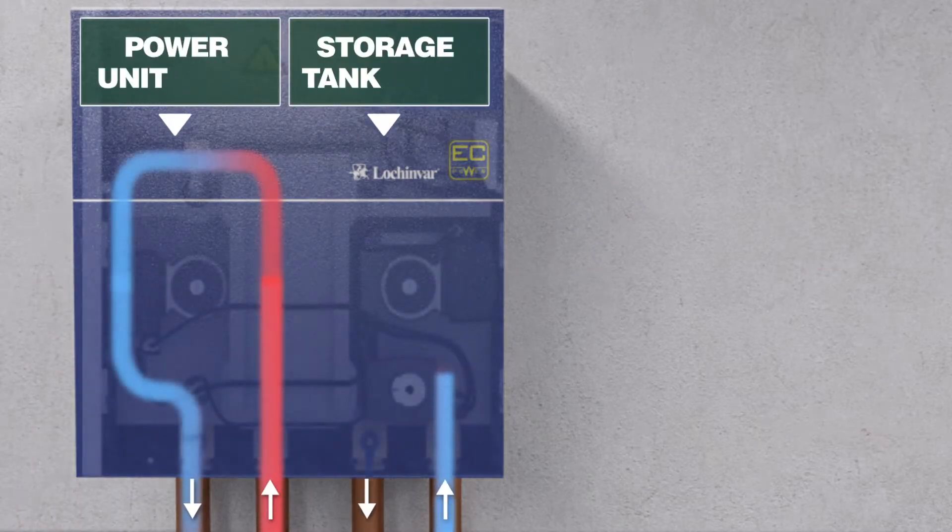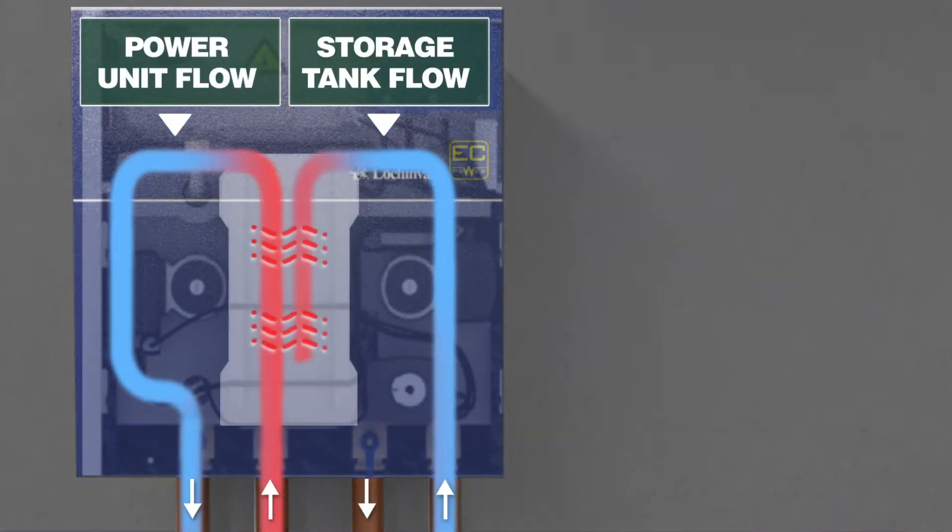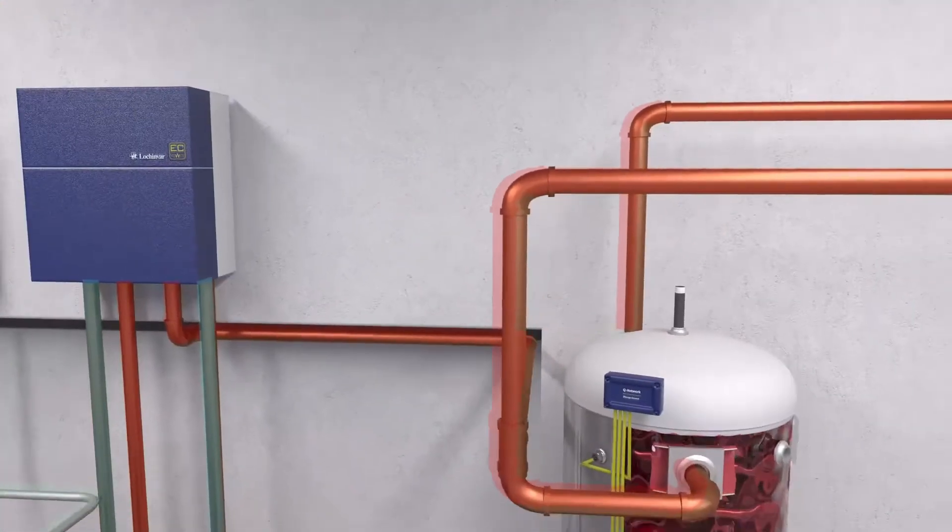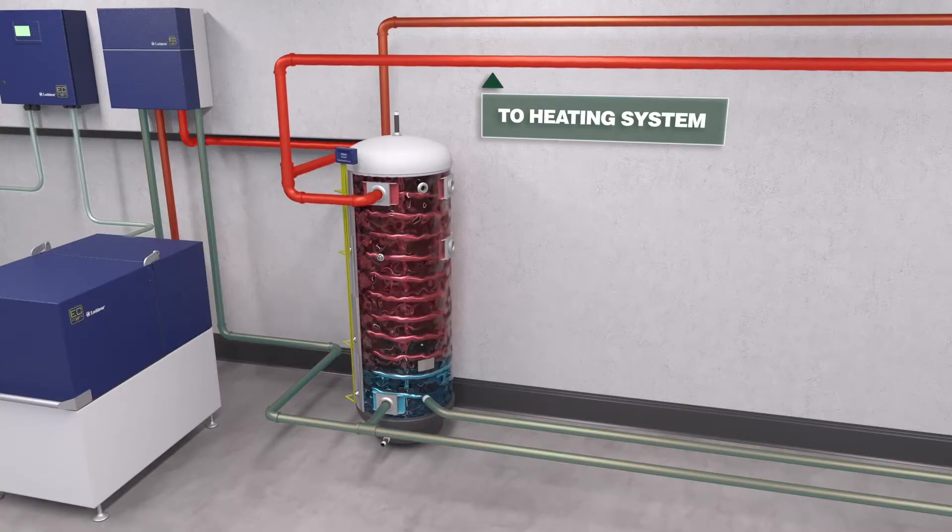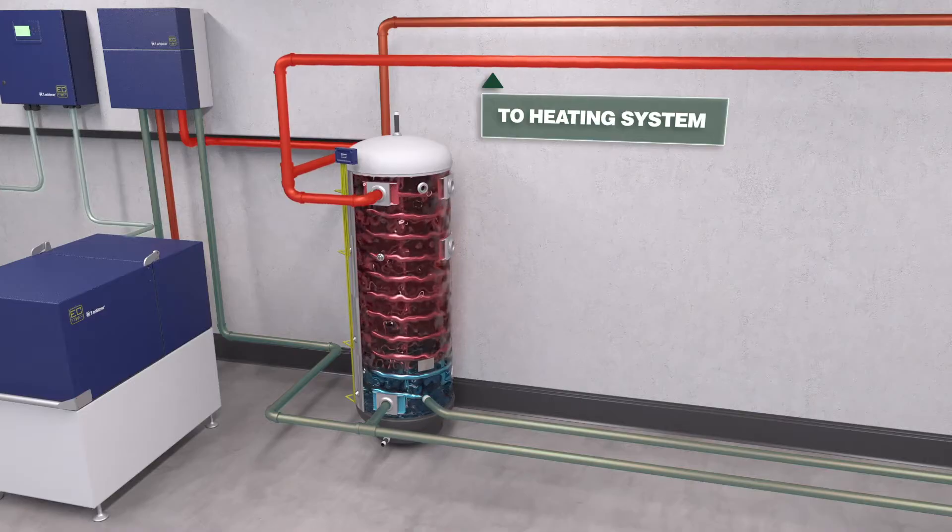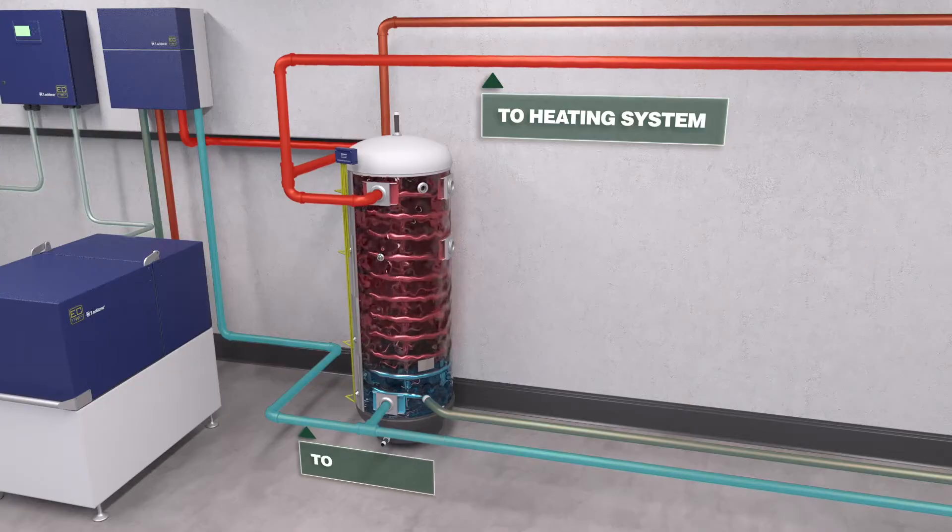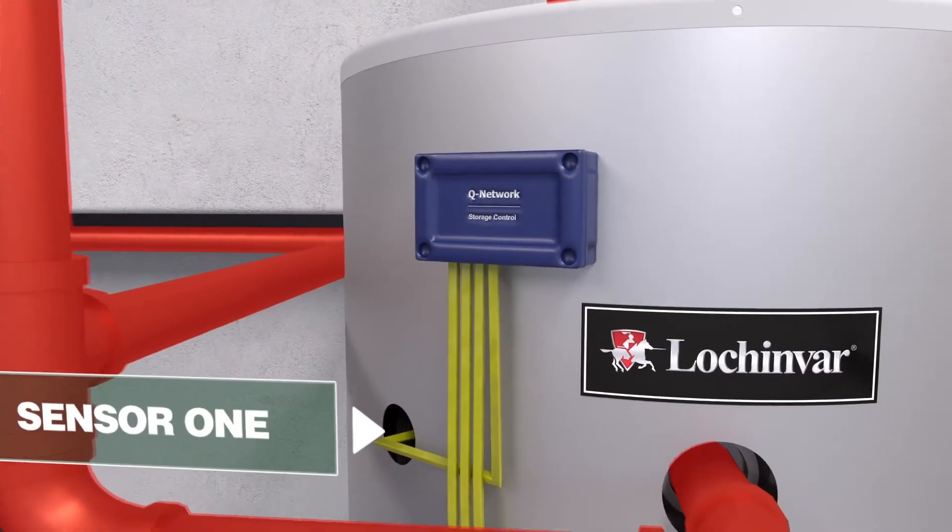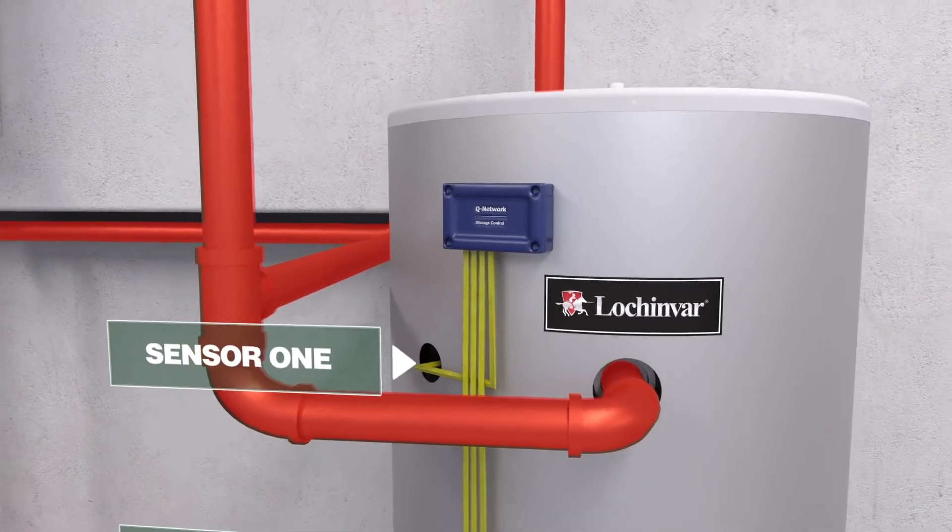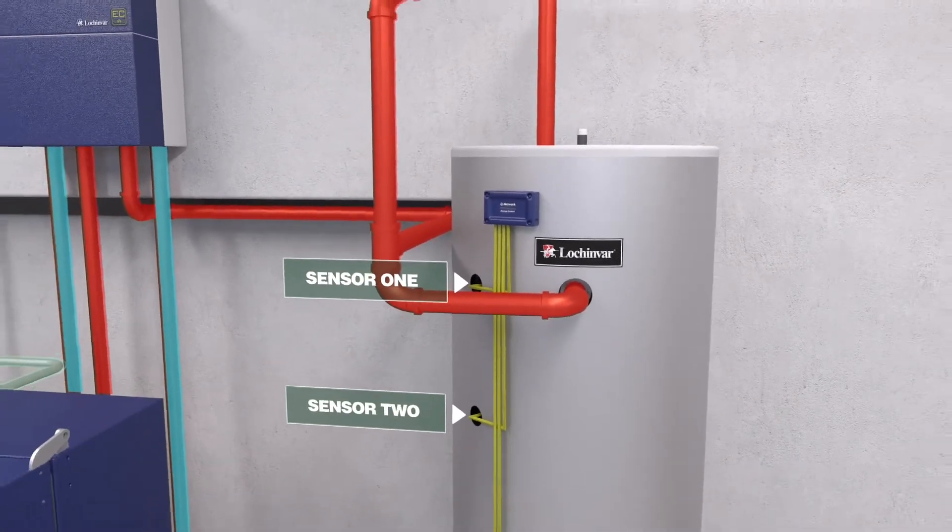With its brazed plate heat exchanger, the heat distributor supplies heat to the storage tank. The storage tank stratifies the water, keeping warmer water on top to supply heat for the heating system while cooler water remains below to cool the power unit. The tank has four sensors to monitor water temperature fluctuation.